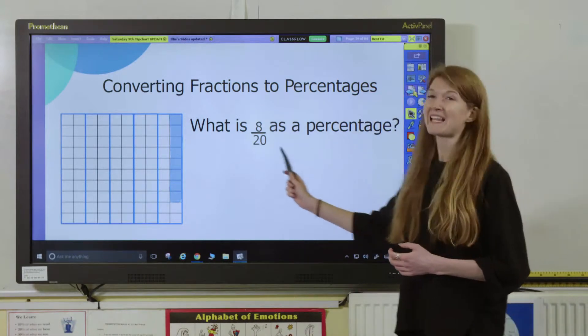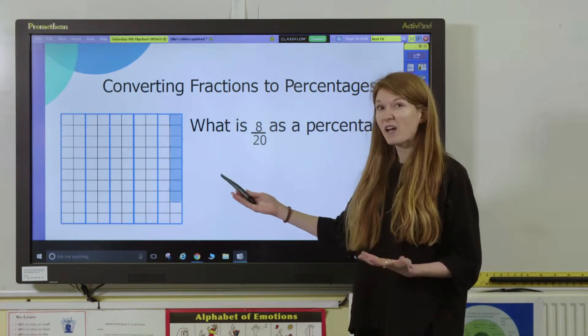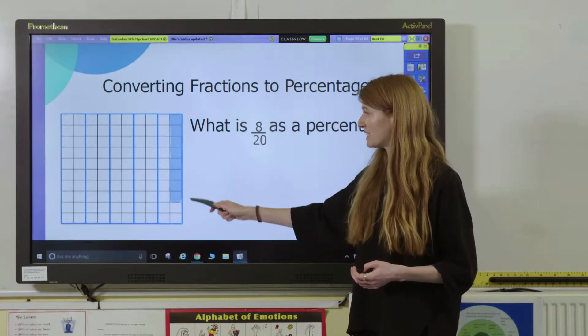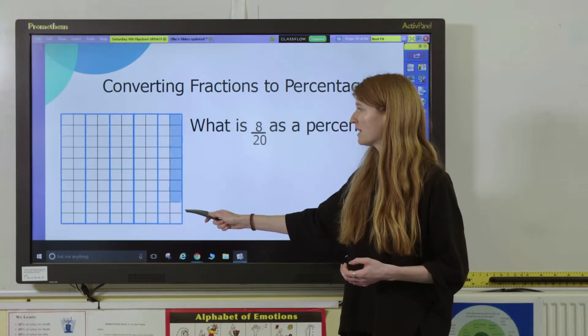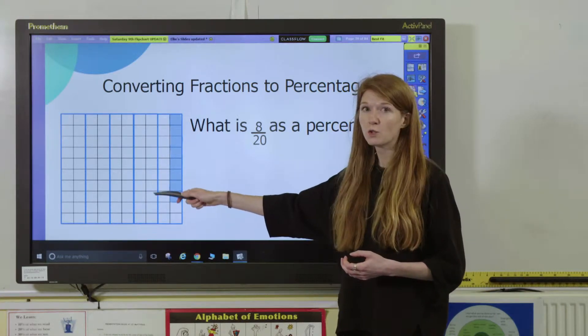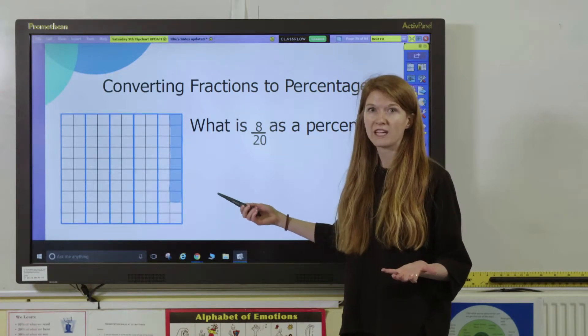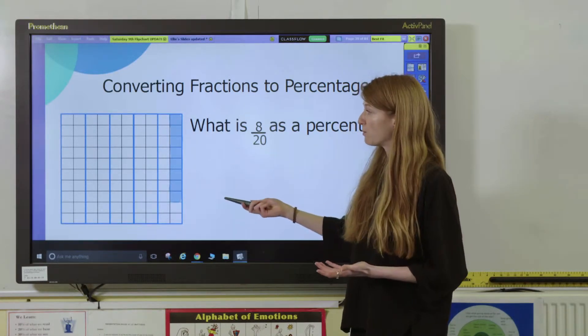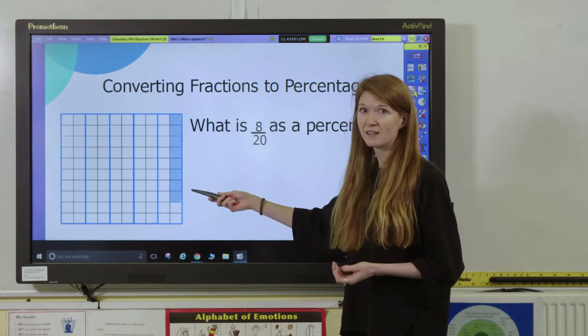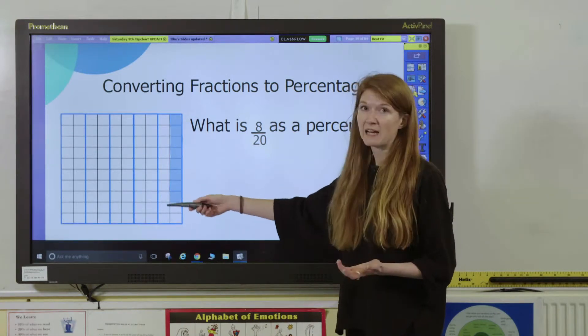Remember, percentage means out of 100. So, what we're asking is, if we have shaded 8 out of 20 and then repeated that pattern across my 100 square, how many out of the 100 would I shade altogether? And you could actually give pupils a 100 grid or square like this and ask them to repeat the pattern across.